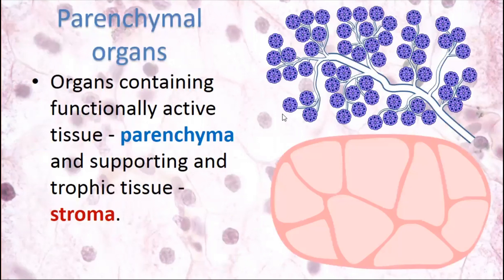What is the general principle of parenchymal organ structure? They have two basic components. First, functionally active tissue called parenchyma, which contains specific cells that are different in different organs and provide the main function of the organ. Second, supporting and trophic tissue called stroma, which is non-specific — it doesn't provide specific function but provides support, maintenance, nutrition, and protection for the parenchyma.